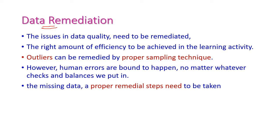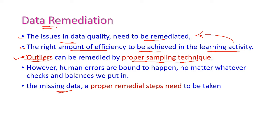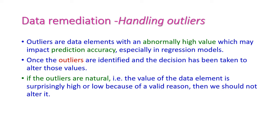Data remediation means the issues in data quality need to be remediated. We saw two issues: first one is outliers and second one is missing data. Those two should be remediated to achieve the right amount of efficiency in the learning activity. The outlier can be remediated by proper sampling technique. Because if the data is collected by humans, human errors may happen, and by using checks and balances, we can remediate those outliers. When it comes to missing data, proper remedial steps need to be taken.